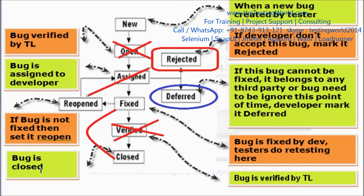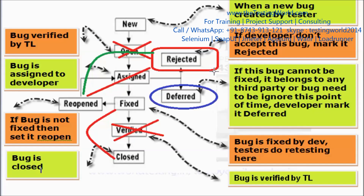Next interview question: we reopened the bug, but the developer rejected it again — a second rejection. What do you do? If you're still not satisfied with the developer's comments, I will call a meeting with the developer, dev lead, test lead, and manager, and show the bug to all of them. Now it's the manager's responsibility to decide if it's a bug or not. In 95% of cases, the manager will take the call in the tester's favor and call on the developer to fix it. But if the manager feels it's not a bug, I will close it.